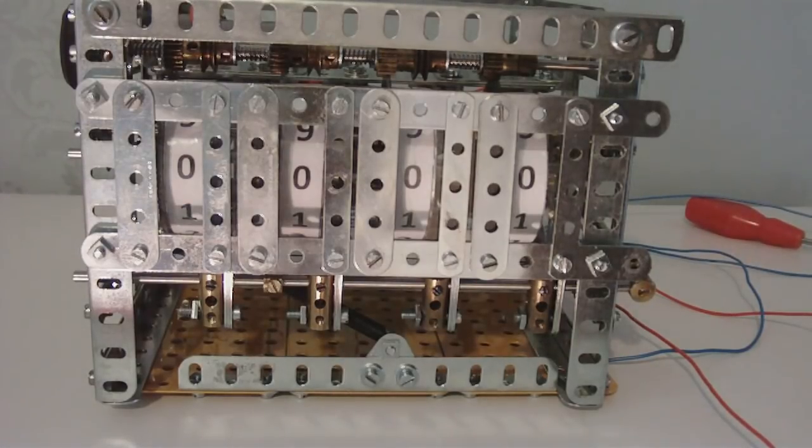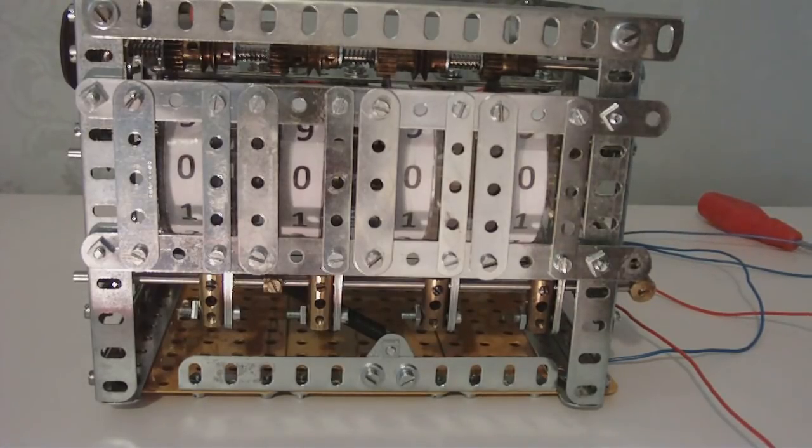That didn't work because Meccano electromagnets aren't powerful enough to do that. So it uses motor assist through a friction drive to the reels. The electromagnets operate an escapement to move the reels on. So let's see it work.